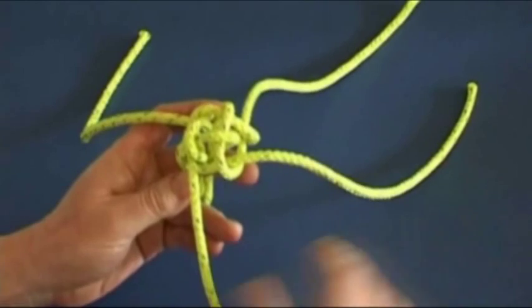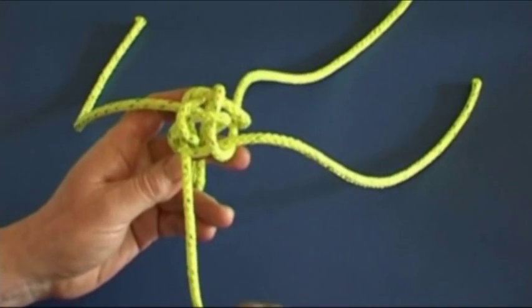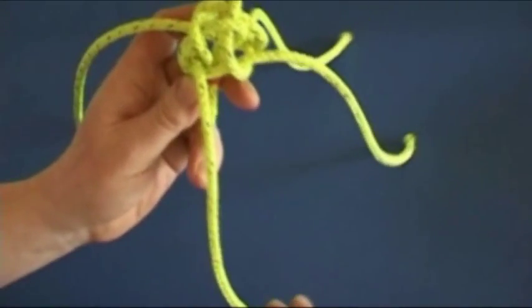So we have tied our two crown knots and we should have something like this. Or hopefully exactly like this.